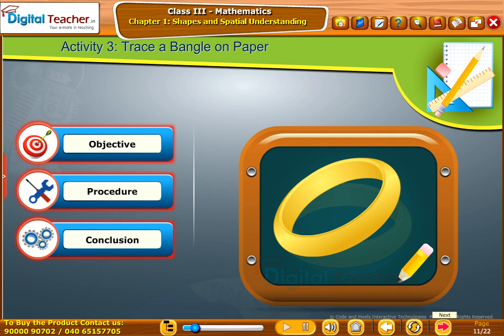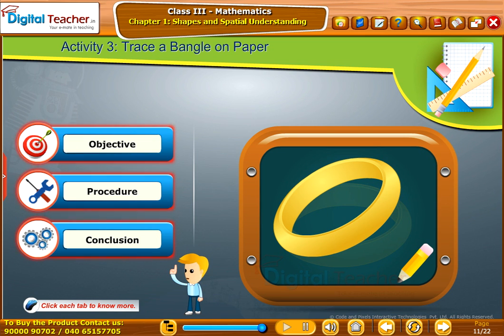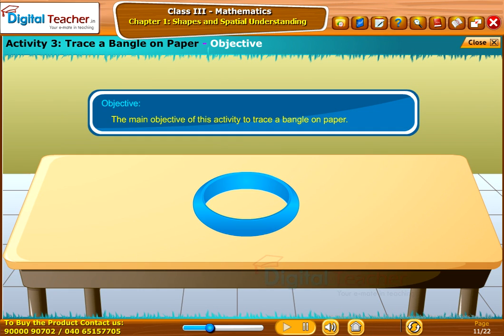Here we will do an activity to know how these shapes can be traced through objects. Click each tab to know more. The main objective of this activity is to trace a bangle on paper.